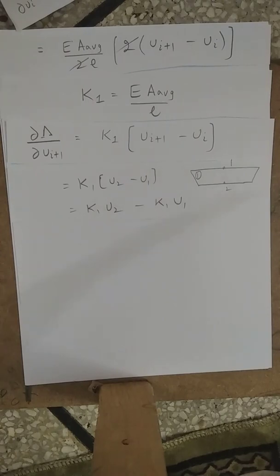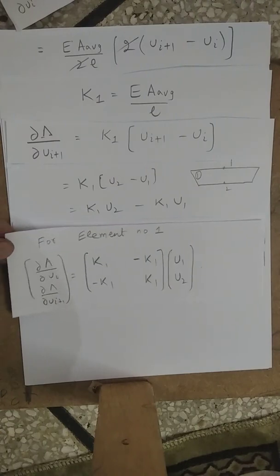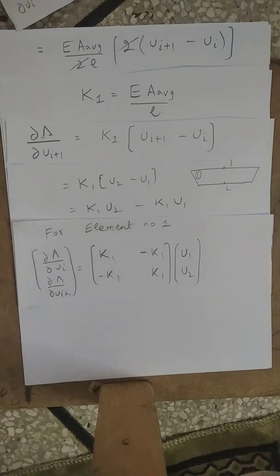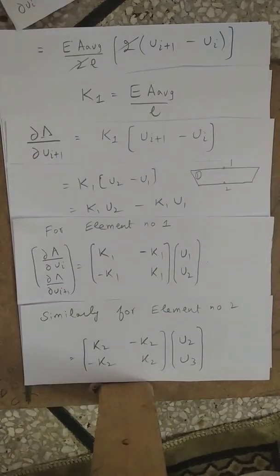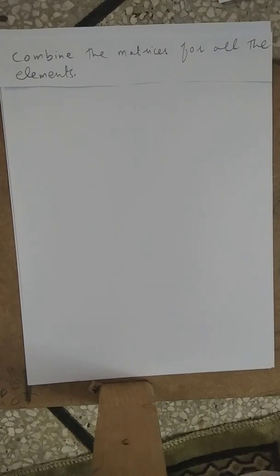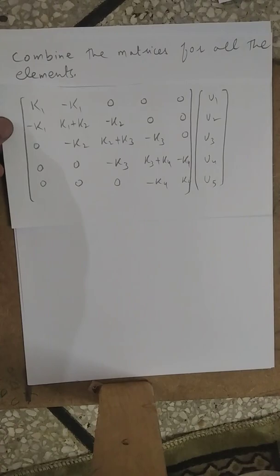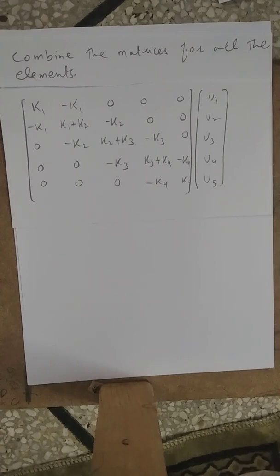We can write these two equations in matrix form for element number 1. Similarly, we solve for element 2, element 3, and element 4 to get their respective matrices. The next step is to combine the matrices for all elements into the global stiffness matrix.